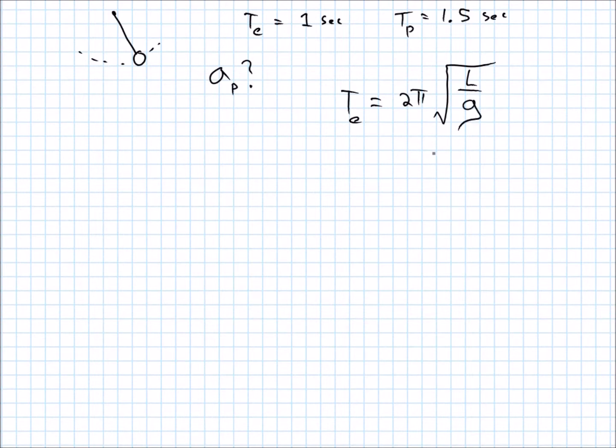Well, there's that g in there. And so this, just writing this again with different subscripts, because the period on the planet is equal to 2 pi times the square root of the length of the pendulum divided by the acceleration due to gravity on the planet. So we need to solve for that acceleration due to gravity on the planet, but we don't know the length of the pendulum.